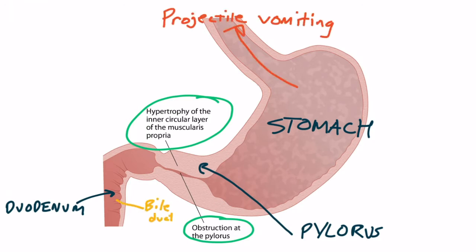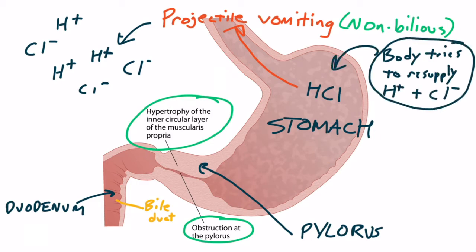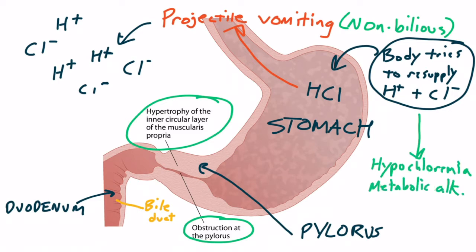The bile duct enters the duodenum distal to the pylorus, meaning bile will not mix with the vomit — therefore these infants have non-bilious vomiting. Remember that gastric juices contain lots of hydrochloric acid, so these patients are losing hydrochloric acid. With prolonged vomiting of nearly three weeks, the infant can expel so much hydrochloric acid that the body keeps trying to resupply the stomach with hydrogen ions and chloride ions, resulting in hypochloremia and metabolic alkalosis.